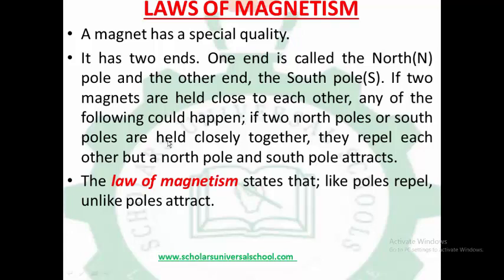If two North Poles or two South Poles are held closely together — that is, North-North or South-South — they repel each other. If you put the North Pole to another North Pole, they will repel. If you put the South Pole to another South Pole, they will repel. But if you put a North Pole and a South Pole together, they attract. These are the laws of magnetism.